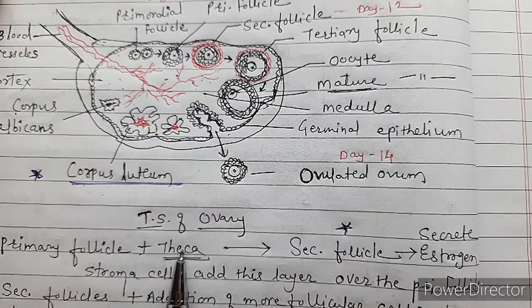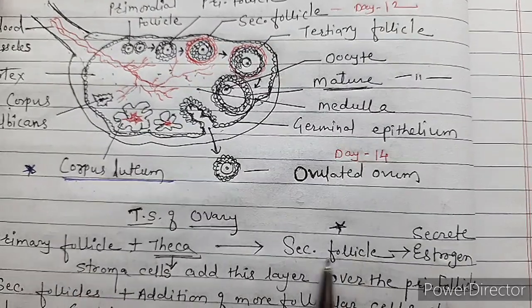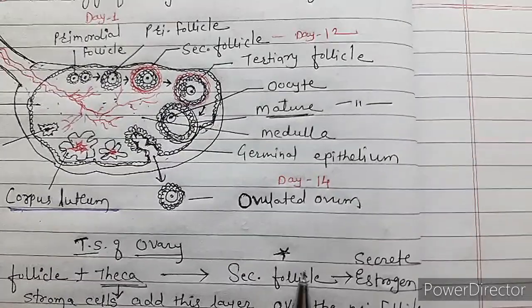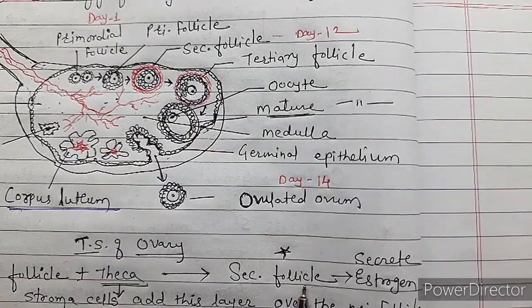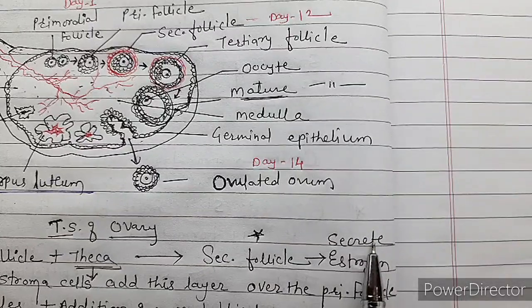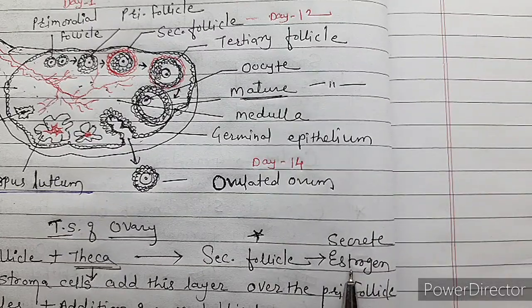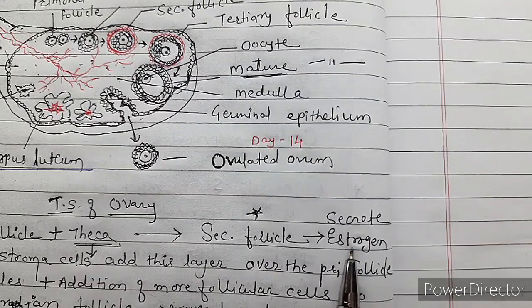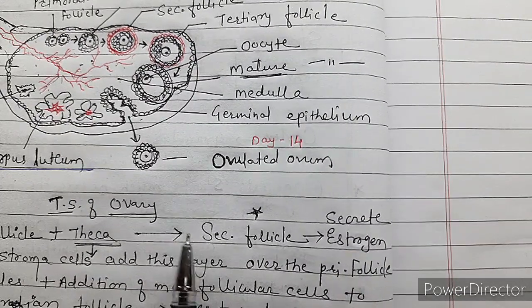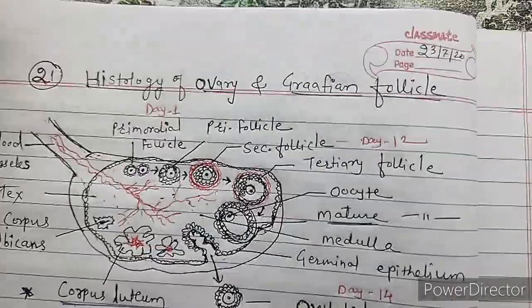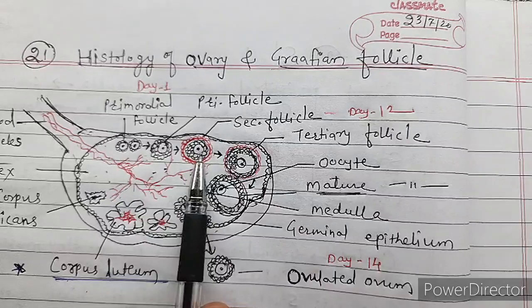This is the primary follicle and this is the secondary follicle. This secondary follicle starts secreting estrogen. You know that there are 5 types of female sex hormones. Estrogen hormone is secreted by the secondary follicle, and here is the formation of the secondary follicle.